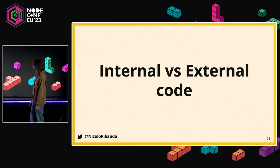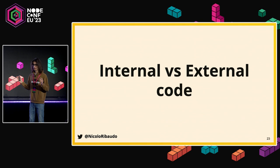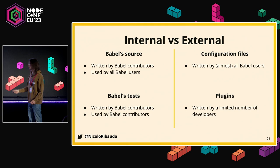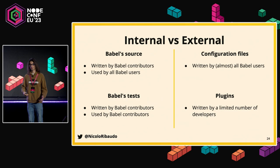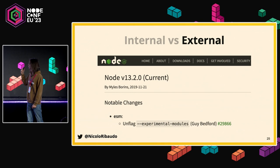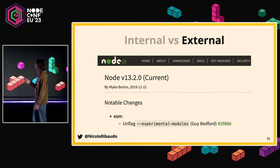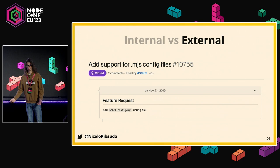Before starting migration we had to decide how we're going to migrate, thinking about what's internal code versus external code — which parts of the migration would affect the most people and which would be more dangerous or beneficial. Babel source is used by every single Babel user, while Babel tests are written and used by a very small number of people. Externally, we have configuration files and plugins written and used by different amounts of people. External code was prioritized initially because in 2019 ESM felt less unflagged, and we didn't want to hold back our users from using ESM in their own code.